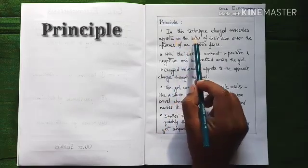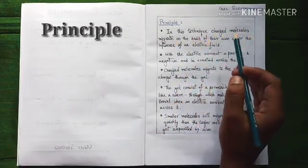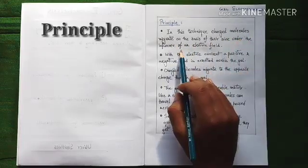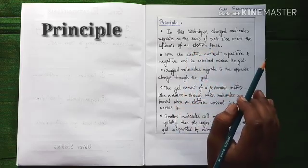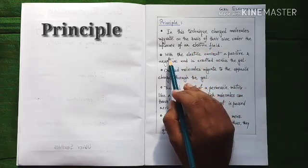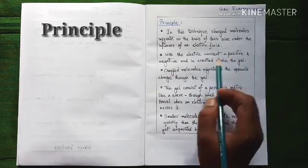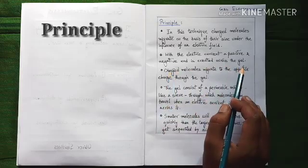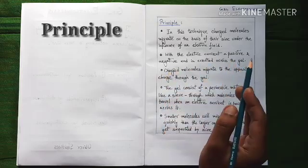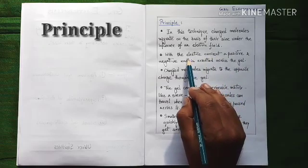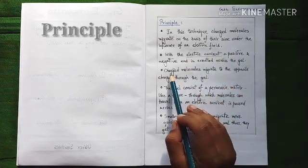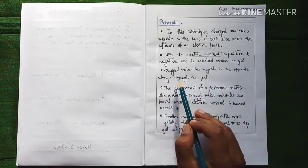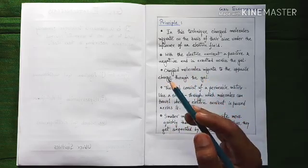Now let's know about its principle. In this technique, charged molecules like DNA, RNA, or protein migrate on the basis of their size under the influence of an electric field. With the electric current, a positive or negative end is created across the gel. So at both ends of the gel, a positive end and negative end respectively will be created by the help of this electric current. Charged molecules, that means DNA, RNA, or protein, will migrate to the opposite charge through the gel.